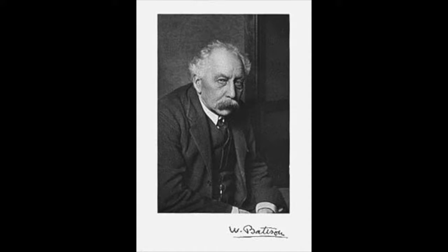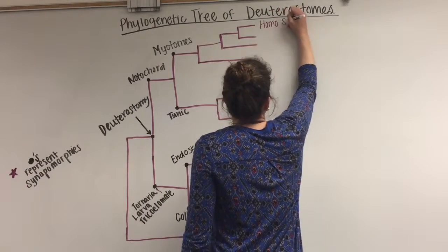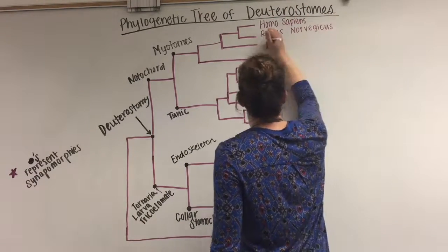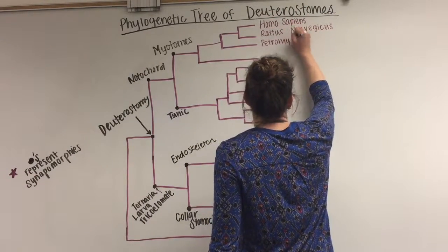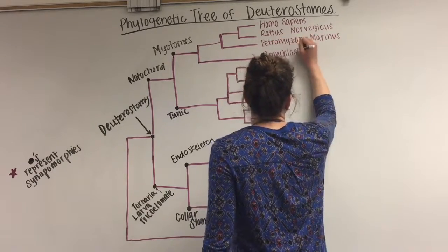It was in the 1880s when researcher William Bateson first compared hemichordates to chordates. Many of the hemichordata characteristics aligned very closely with chordata characteristics, such as the gill slits and dorsal hollow nerve cord he observed.